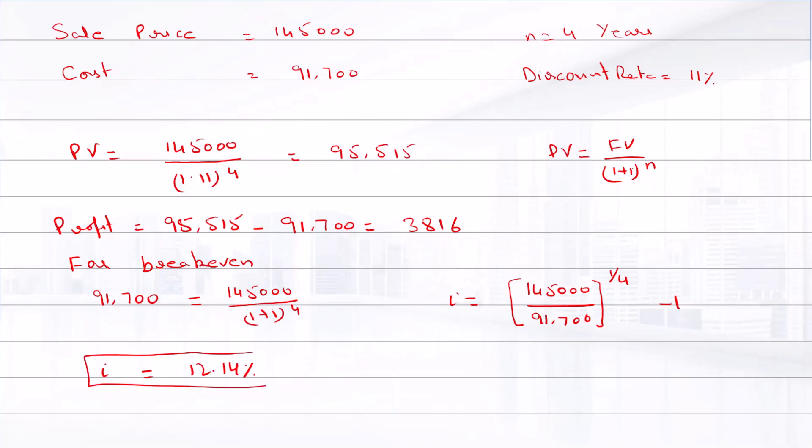So if the interest rate is 12.14%, then if we sell the asset for $145,000, the firm will be at break even.